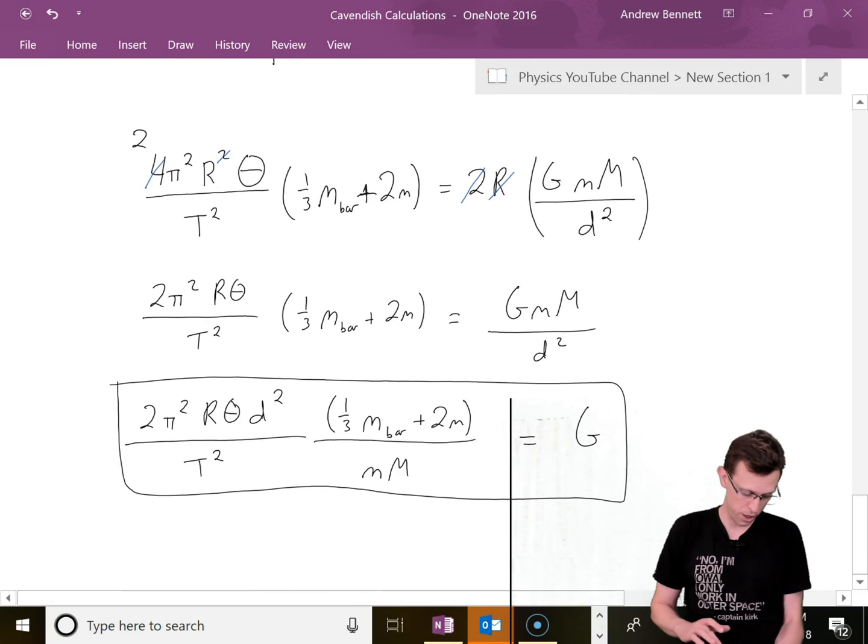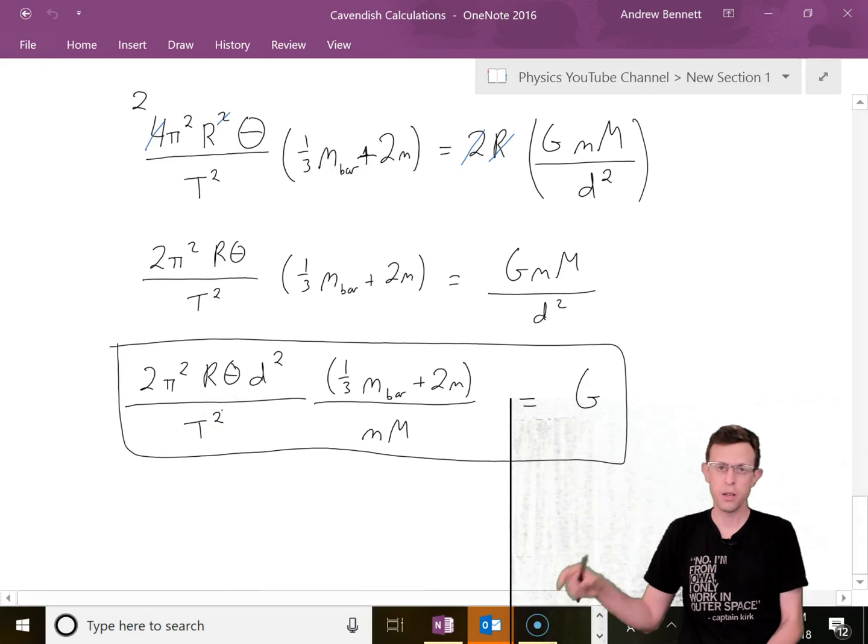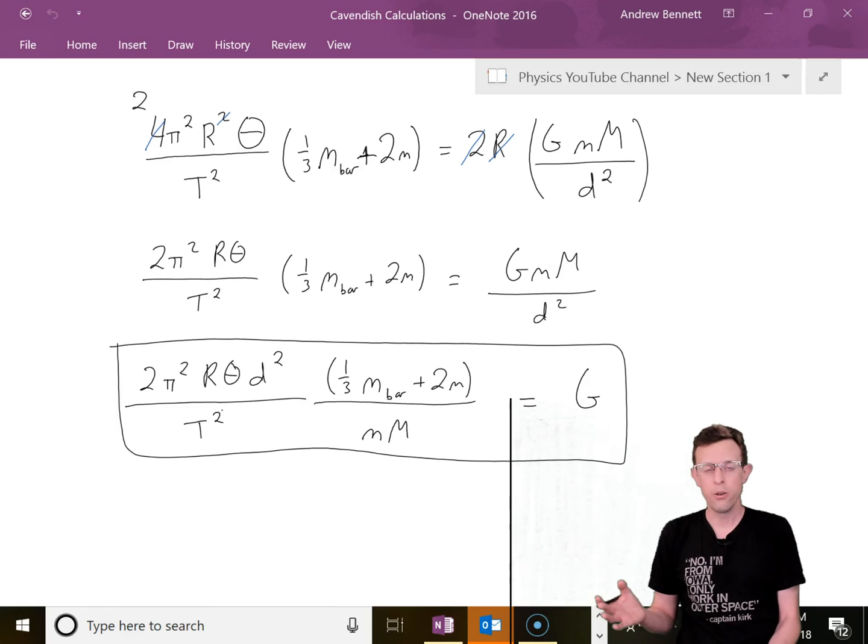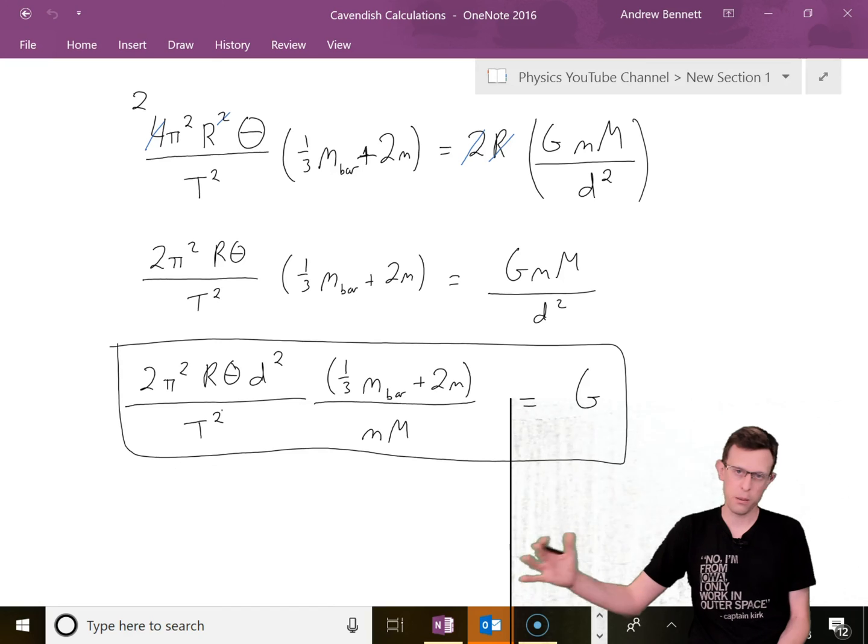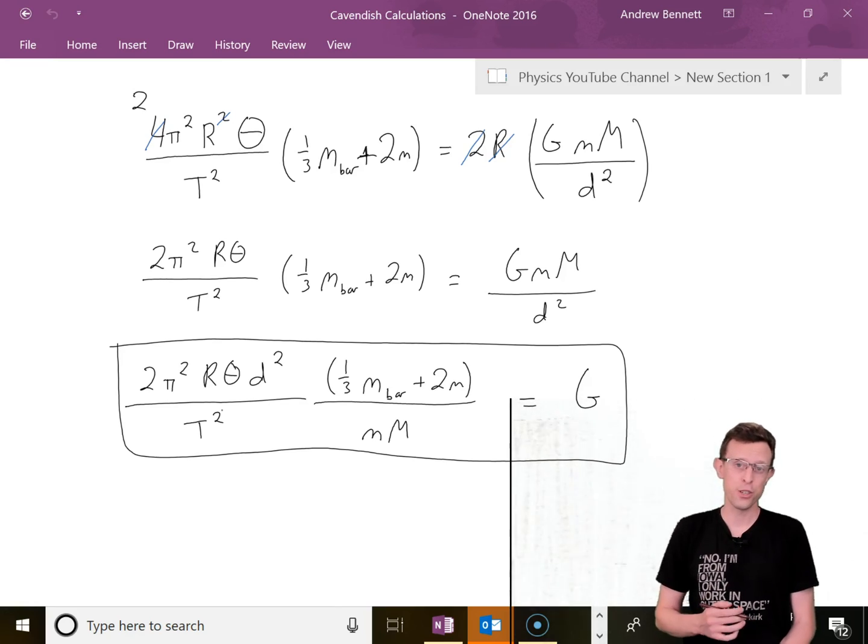Doing a little simplification and rearranging for G, we now have an equation where everything on the left side can be measured directly - big R, theta, D the distance between the big mass and little mass at equilibrium, T squared, all the masses. Every one of those things can be measured directly. This is just to check that we do in fact have a procedure that will allow us to calculate a value for G.